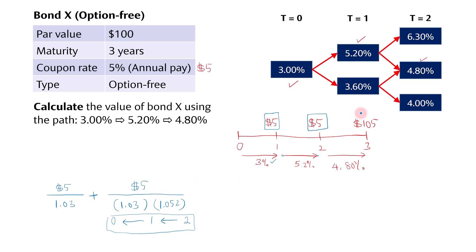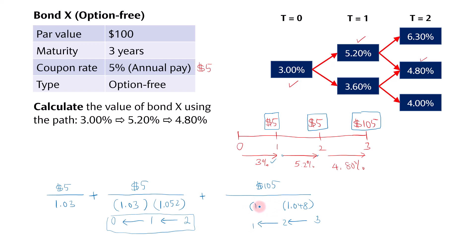For the last cash flow of $105 at year 3, we discount in three steps: first divide by 1.048 to go from year 3 to year 2, then divide by 1.052 to go from year 2 to year 1, then divide by 1.03 to bring it back to year 0. Once you calculate the PV of each cash flow and sum them, you get the value of the bond under the Pathwise Valuation.